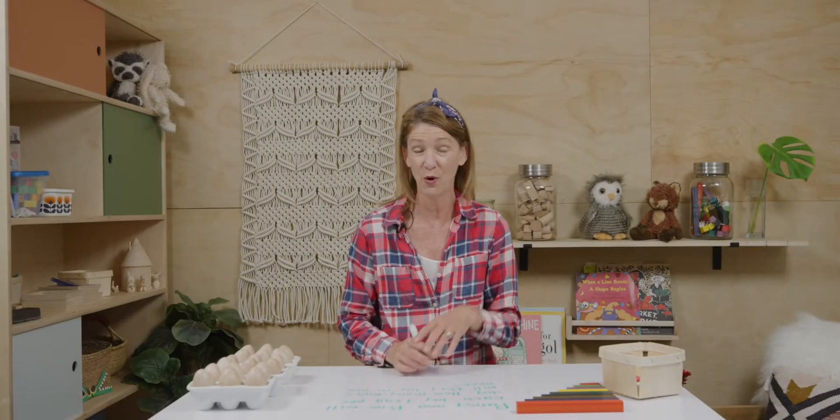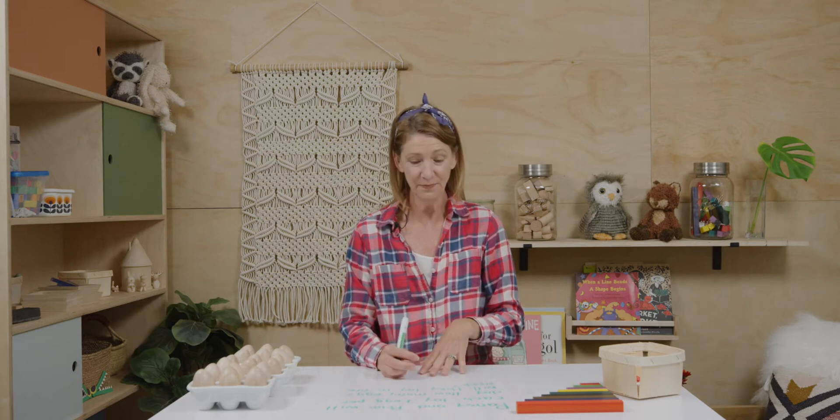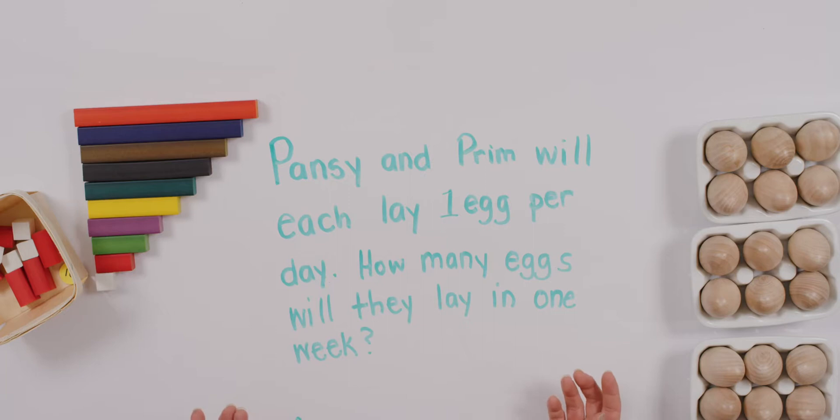And so let me read the story that I've come up with. You know they're only baby chickies now but what happens to baby chickies? That's right. They will grow up to be hens and when they become hens they will lay eggs. So let's read our story. Pansy and Prim will each lay one egg per day. How many eggs will they lay in one week?